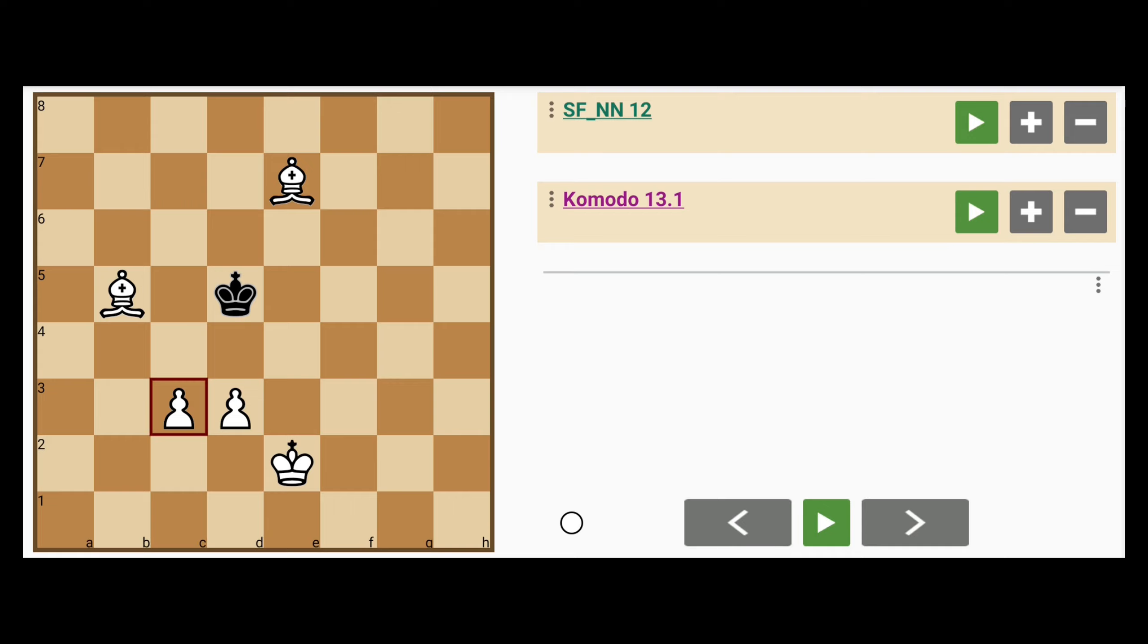How about c4 check? King to e6. Bishop to d8. King to f7. C5. King to e6. C6. King to f5. C7. And you get the idea. White promotes. There's nothing black can do about it, and the game is soon over.